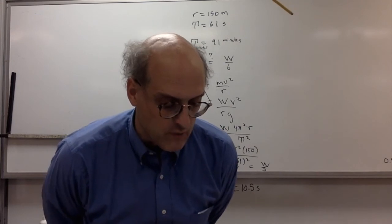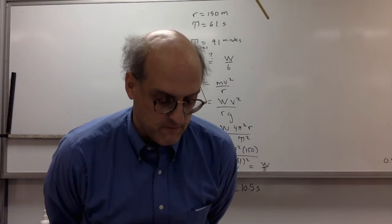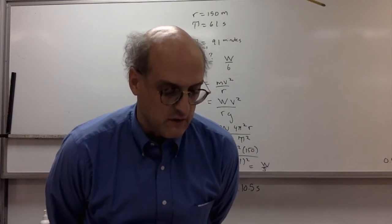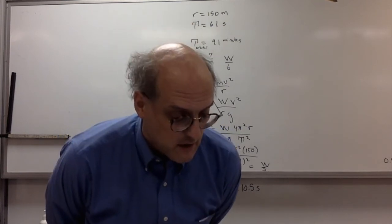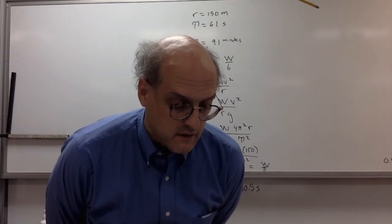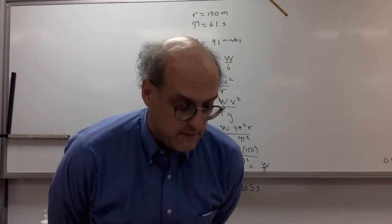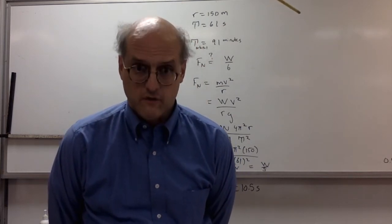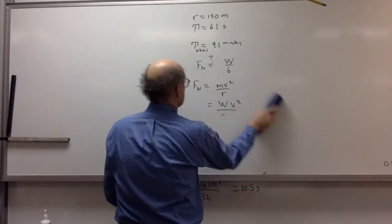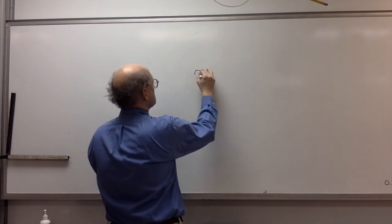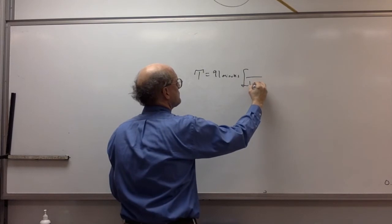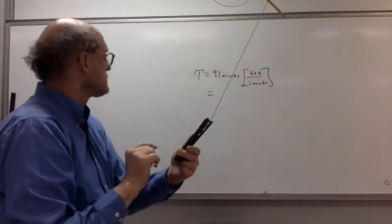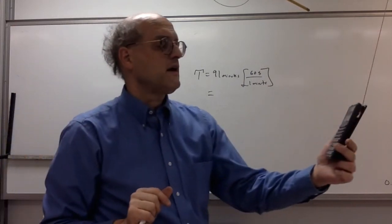Part B: check the orbital altitude of the station. The movie claims 210 miles, with an orbital period of 91 minutes. Converting: 91 minutes × 60 = 5,460 seconds. We'll use the orbital mechanics formula to find what altitude corresponds to a 91-minute period.